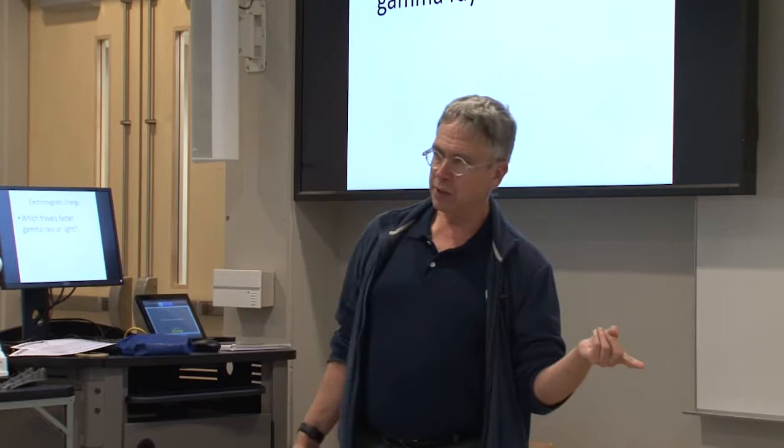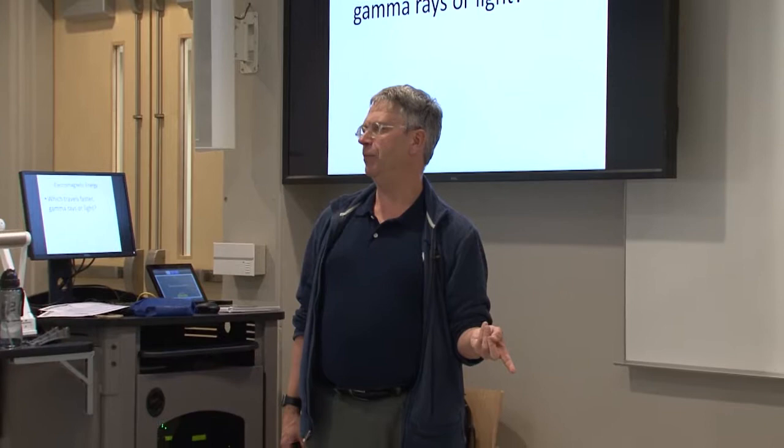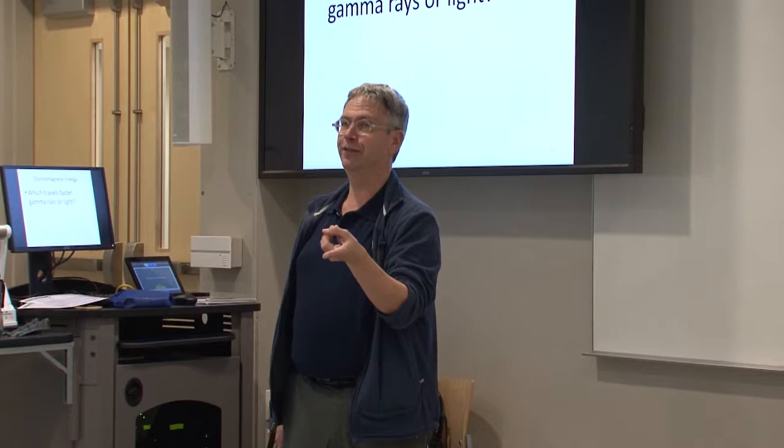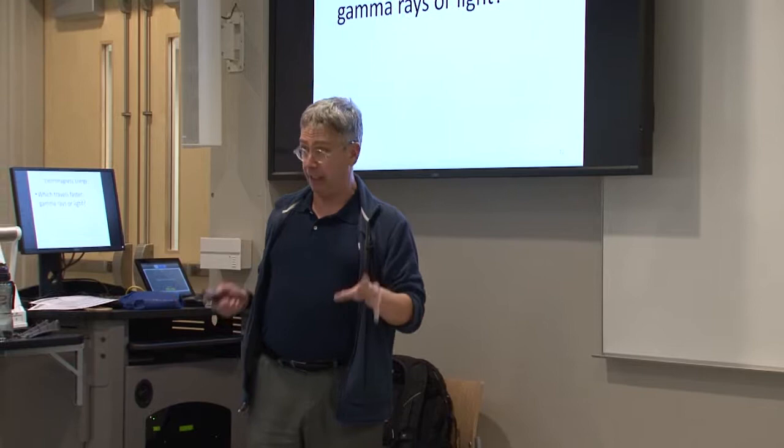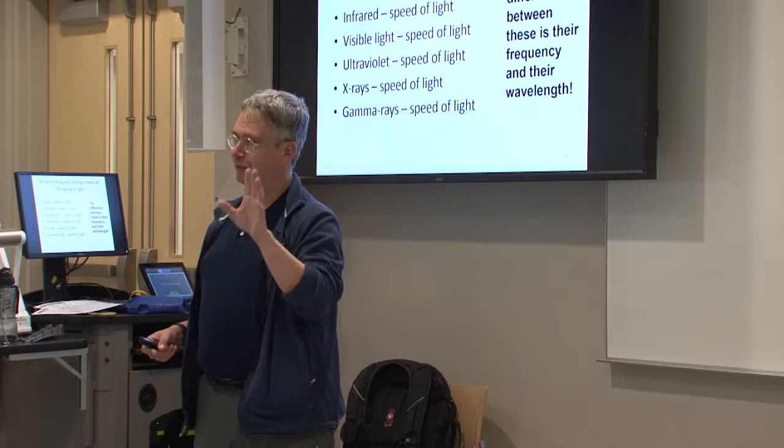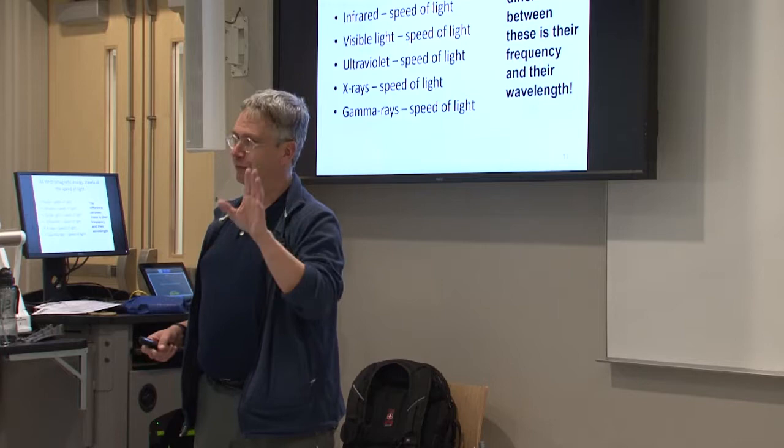Here's a question: which travels faster — gamma rays or visible light? The same. That's not crazy — gamma rays are light. All these things are part of the same electromagnetic spectrum, so they all travel at the speed of light. Everything's at the speed of light. The difference between them, going back to the piano analogy, is the pitch and the wavelength. High C and middle C both travel at the speed of sound — the difference is the pitch and wavelength. The same is true with light: the frequency determines whether it's gamma rays, visible light, or infrared.